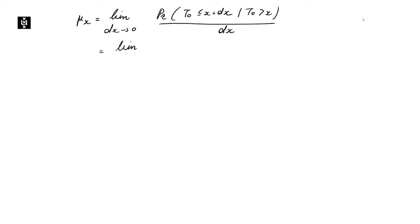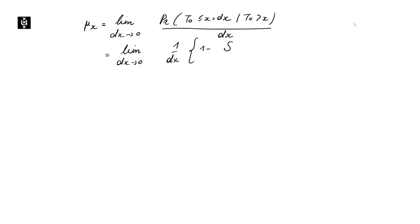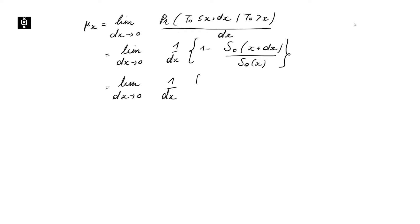By using our connection with the survival function of a zero-year-old, we can rewrite this expression in the following way: one minus the survival function of a zero-year-old evaluated at X plus dX, divided by the survival function of a zero-year-old evaluated at X. Manipulating this ratio further, we arrive at S₀(X) minus S₀(X + dX), divided by S₀(X).